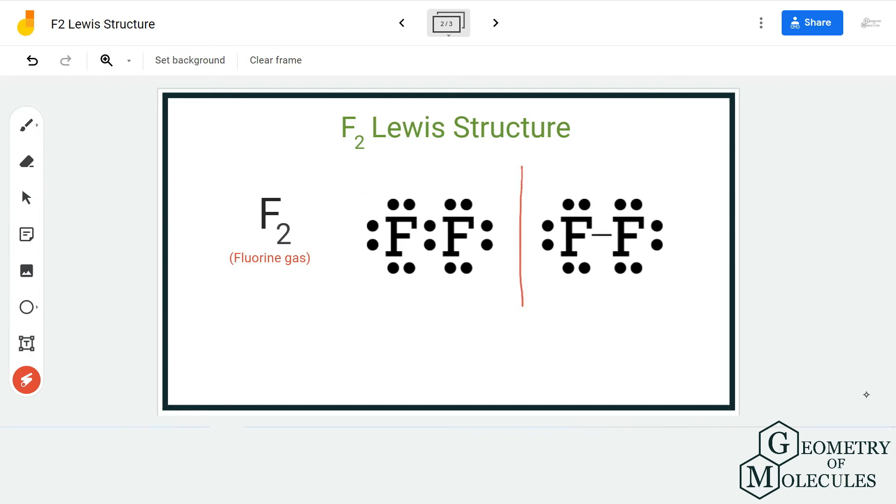Hence, this is a stable structure. Generally, fluorine atoms just require one valence electron to have a complete outer shell, and by sharing these electrons with each other, they help each other to have a stable structure.